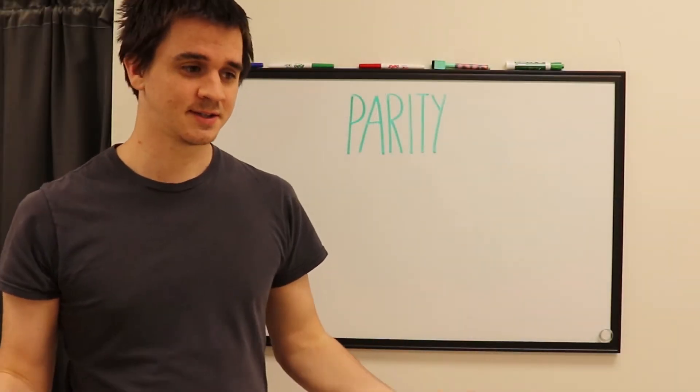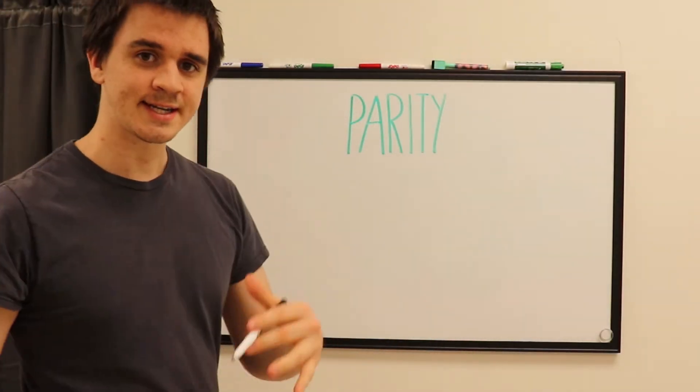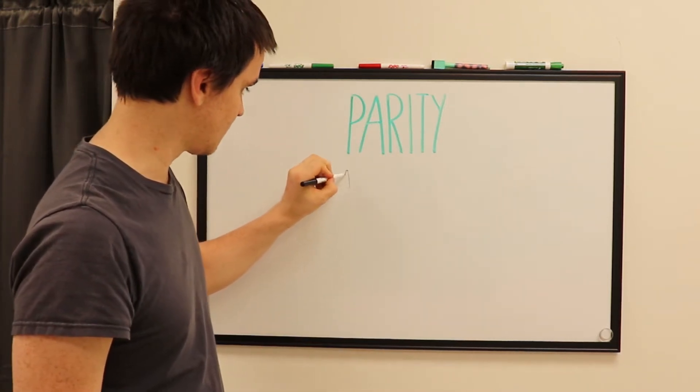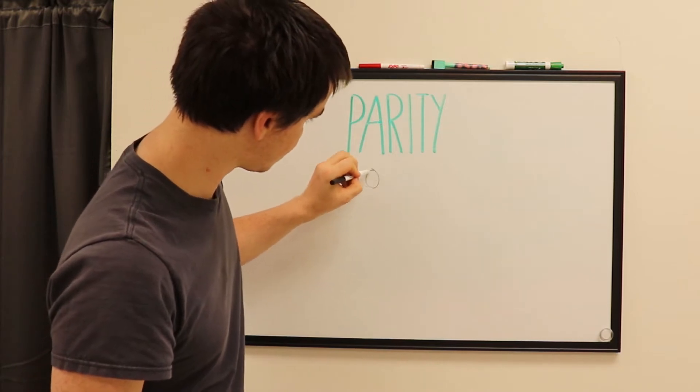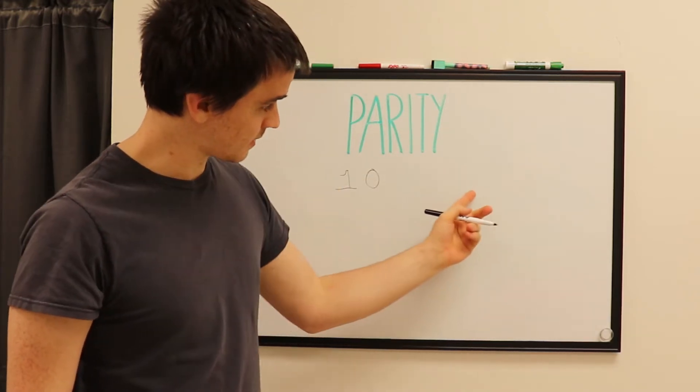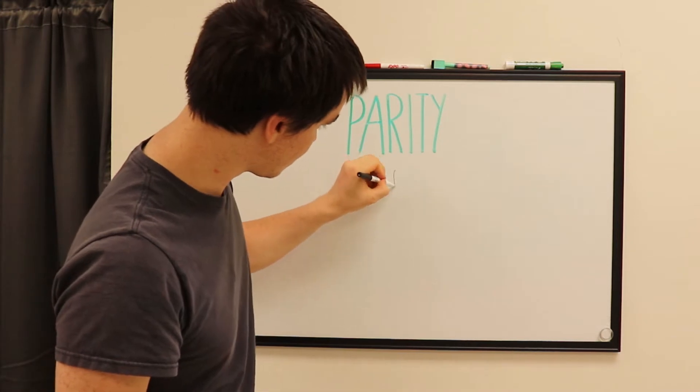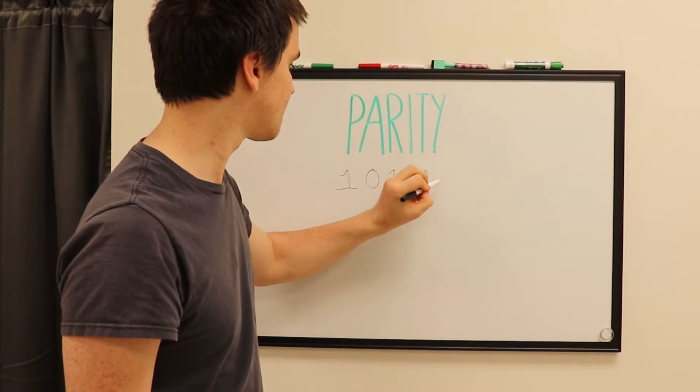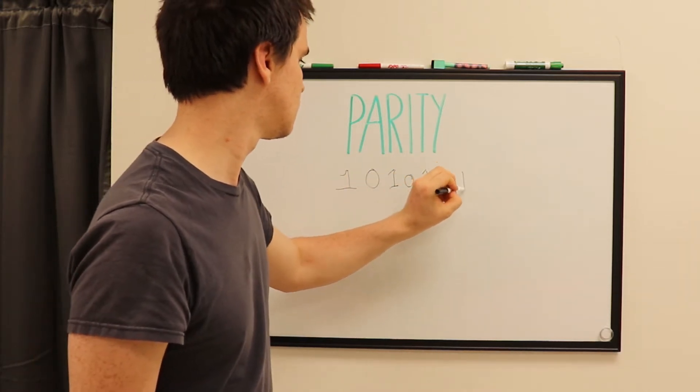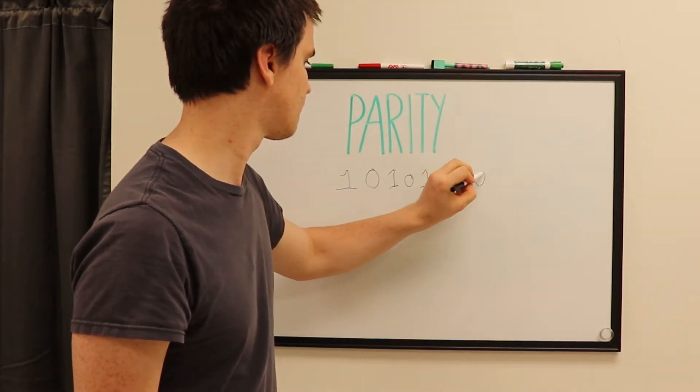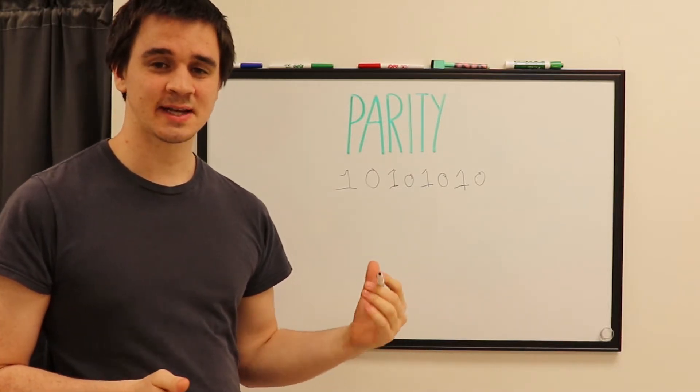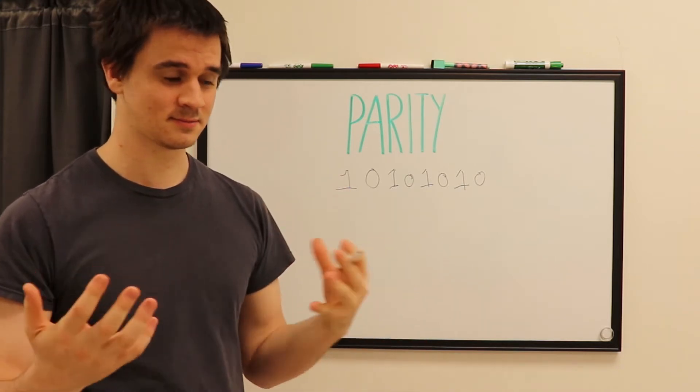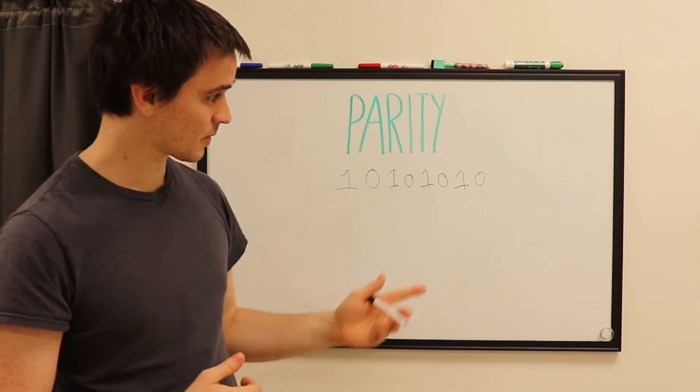So to get parity, we have to understand some basic things first. Data is stored in your computer as a one or a zero. And if we put a bunch of these together, they will form what is called a word.